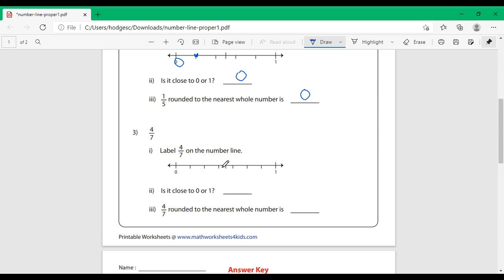So, 1, 2, 3, 4, 5, 6, 7. The midway is 1 half, and the whole is the equivalent of 7 sevenths. Put your 4 sevenths on the number line. You have 1 seventh, 2 sevenths, 3 sevenths, and right here is 4 sevenths.